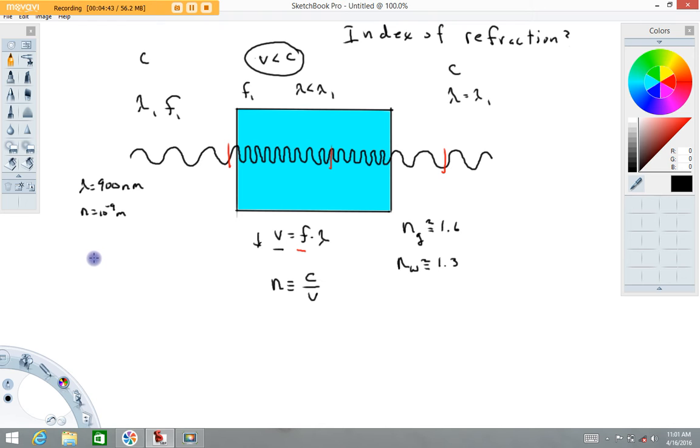Since index refraction is C over V, it's not too tough an algebra problem to show that V has to equal C over N. So in this example, that would be 3 times 10 to the eighth meter per second over N. Now, if I'm assuming this is glass, I would use 1.6. And we get a value of about, bear with me here for a moment.